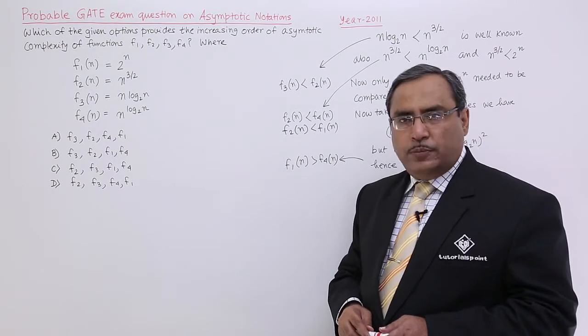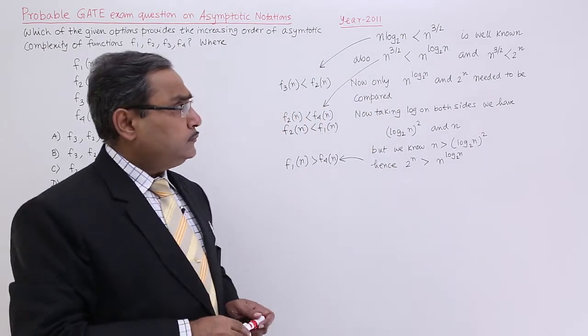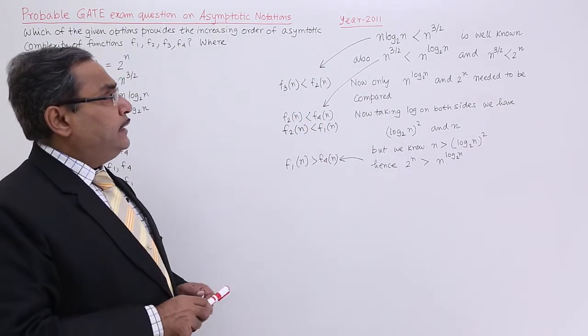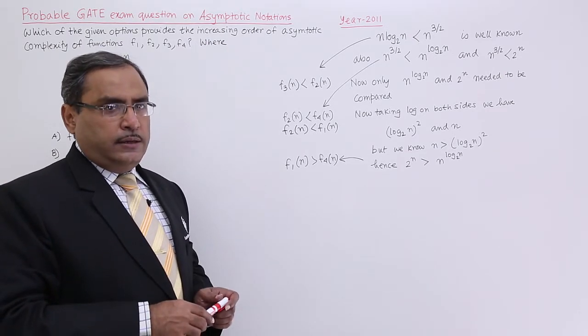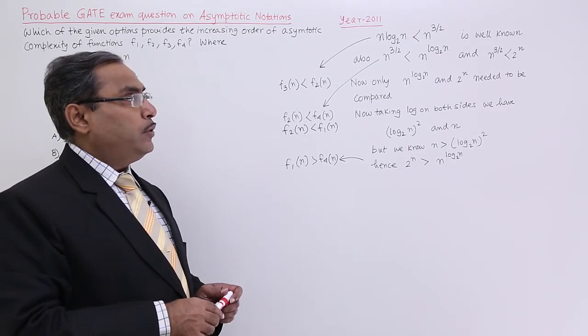Now, how to solve it? We can try in this way. That is, n log n to the base 2 is always less than n to the power of 3/2. That is well known.